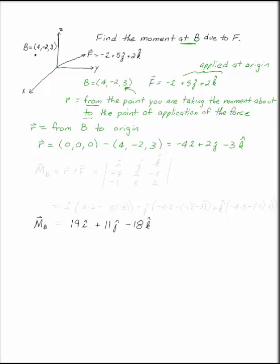Once you have the vector R and you have the vector F in Cartesian form, the moment at B due to F is R cross F. So you set up your cross product: i, j, k. It's very important—R goes on the top line. So you have -4, 2, -3, and then your F vector is on the bottom: -1, 5, 2. You evaluate that cross product.